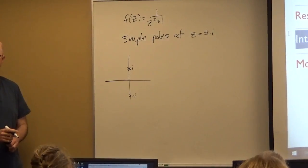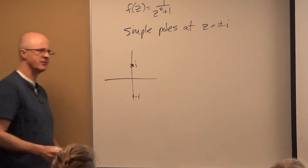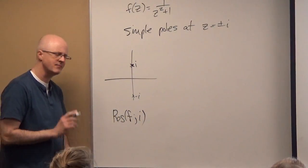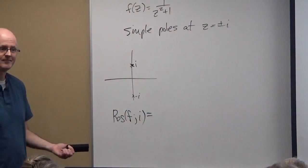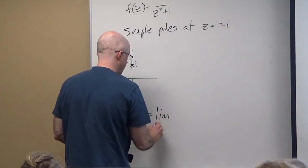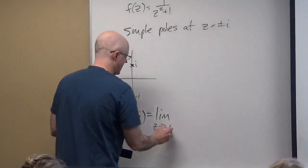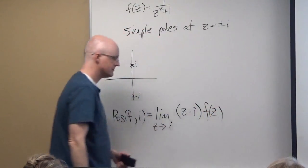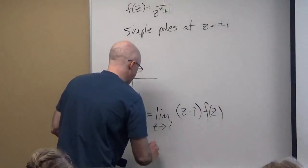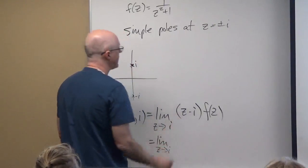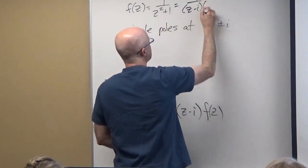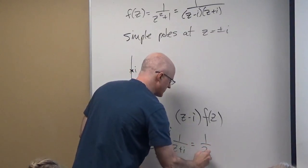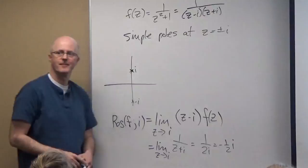We've calculated the residues using Laurent series; let's use the limit formula instead. For a simple pole, the residue at i is the limit as z approaches i of (z minus i) times the function. The factor (z minus i) cancels with the denominator, leaving the limit of 1/(z+i) as z goes to i, which equals 1/(2i), or negative one-half i. That's the residue.